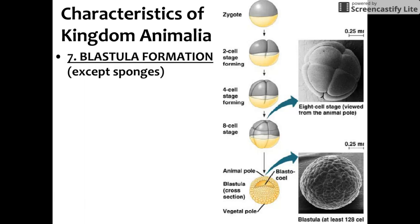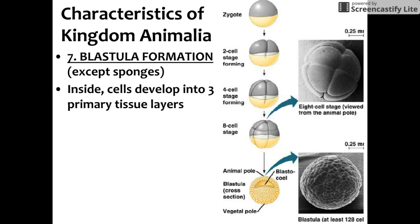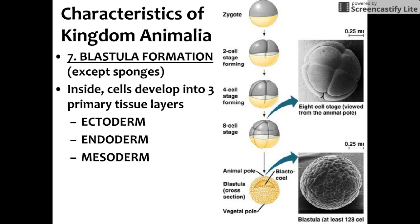The seventh characteristic that all animals except sponges share is blastula formation. When an egg is fertilized by sperm, it forms a zygote — a single cell. That cell divides to become two, two becomes four, four becomes eight, and so on. At about 16 cells, it begins to form a hollow ball called a blastula. This happens very early on, within the first 24 to 48 hours after fertilization. Within the blastula, cells begin to differentiate into what we call the primary tissue layers: the ectoderm, the endoderm, and the mesoderm.